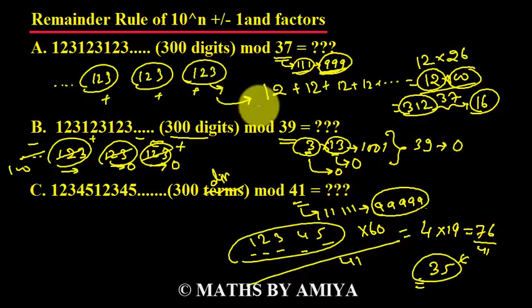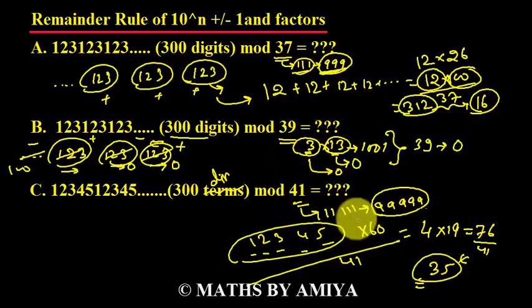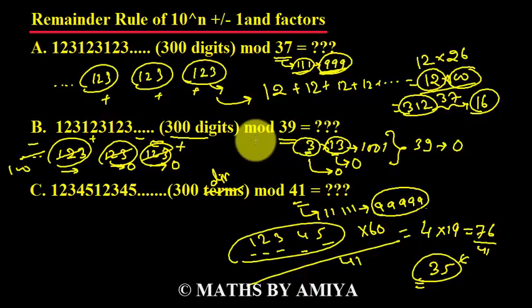I hope it is clear. So we can solve these questions by identifying the factors. 37 is a factor of 999, 41 is a factor of 99999. Make a bundle of the required number of digits, then use all-plus signs if the divisor is of the form 10^n minus 1, or alternating plus-minus from the right-hand side if it is of the form 10^n plus 1. I hope it is clear. Feel free to reach out if you have any doubts — on this video thread or on Facebook. Thank you and happy learning.